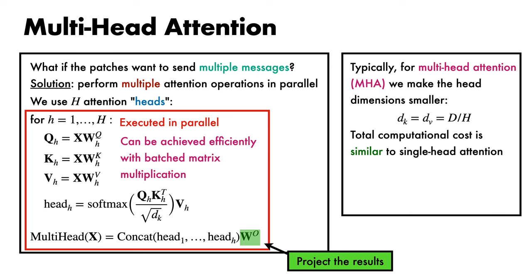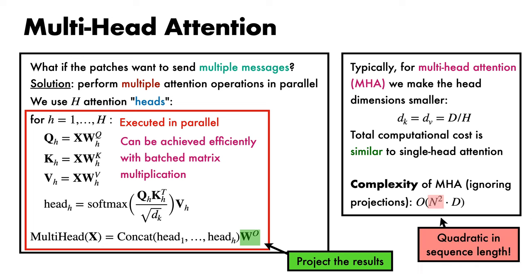One final point: the asymptotic complexity of multi-head attention, ignoring projections, is O(n² × d). This means the cost of attention is quadratic in the sequence length. Many researchers have proposed ways to reduce this complexity, but so far no one has proposed a model that reliably outperforms vanilla transformers at scale.